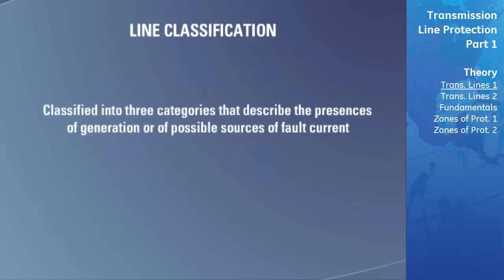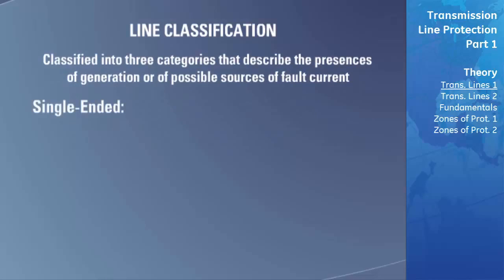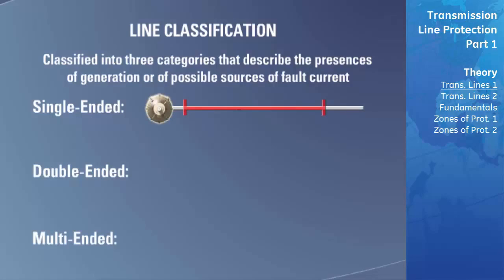Transmission lines are classified into three categories describing the presence of generation or possible sources of fault current at the line's boundaries. These are single-ended, double-ended, and multi-ended. A single-ended line, also called a radial line, has a source at only one end and is used to deliver power from the source to a load at the other end. Whenever a fault occurs, there is only one source of current to feed the fault.